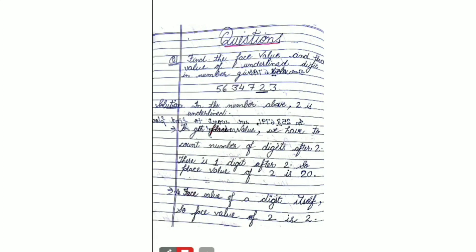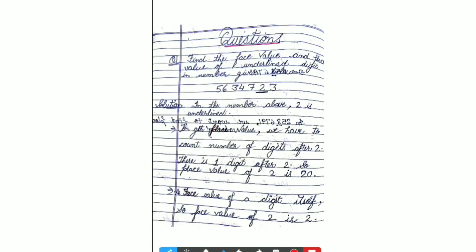Question: find the face value and place value of the underlined digit. The number is given, and 2 is underlined. First, let's calculate the place value using the shortcut. After 2, there is only 1 digit, so we put one zero after 2, giving us 20. Hence, the place value of 2 is 20. Now for face value — can the value of 2 be 1 or 4? No. So the face value of 2 is 2 only. Face value of a digit is the digit itself.